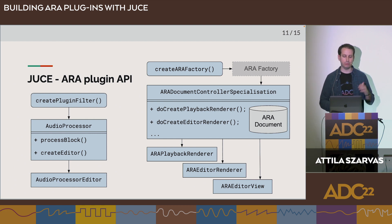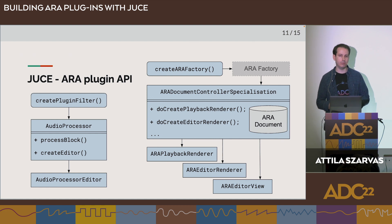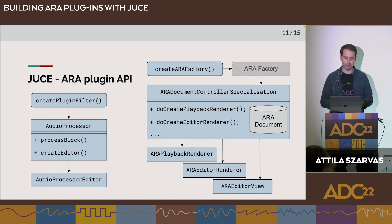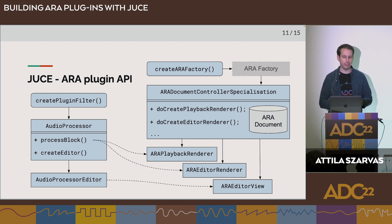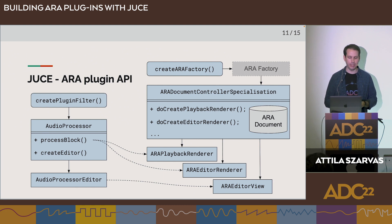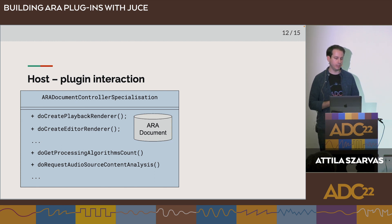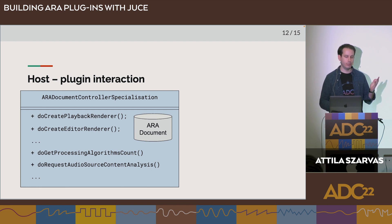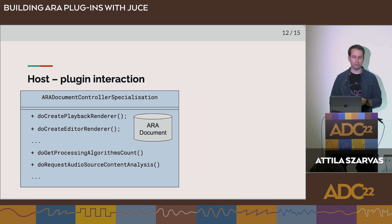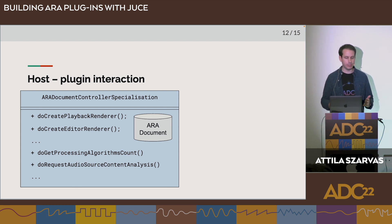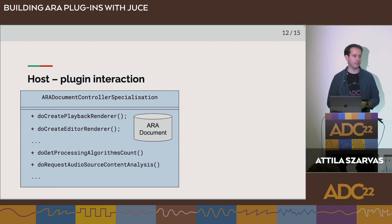The editor view is used to provide additional ARA information that you can present in the audio processor editor. To implement these, you inherit from the playback renderer and related classes, and overload do_create_playback_renderer, do_create_editor_renderer, and similar functions, returning instances of your own plugin classes. There are special helper functions that call the playback renderer functionality from inside the process block and also from the audio processor editor. Most of the host-plugin interface functions are optional, so you can build out your ARA plugin's functionality gradually.